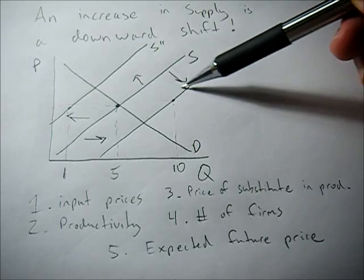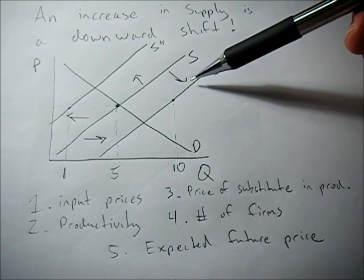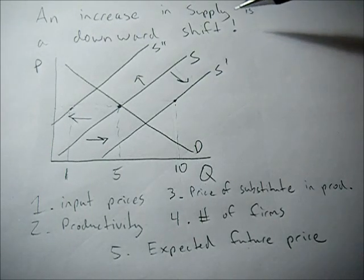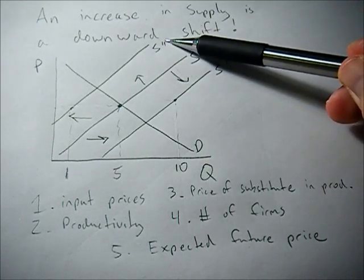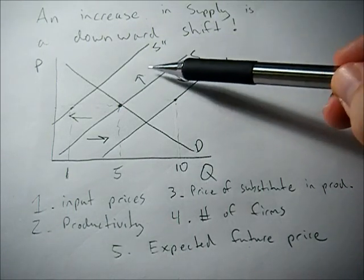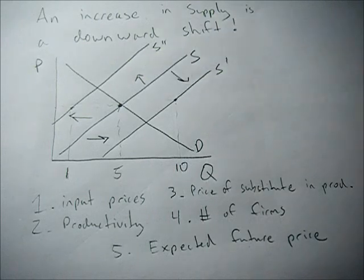So remember which direction the supply curve shifts. It's kind of counterintuitive. An increase in supply is a downward shift. And likewise, a decrease in supply is an upward shift.